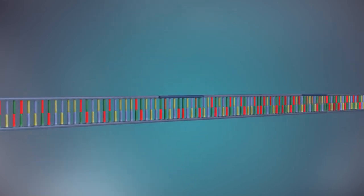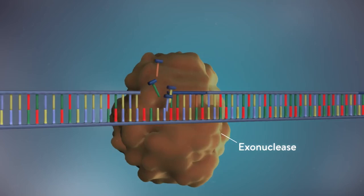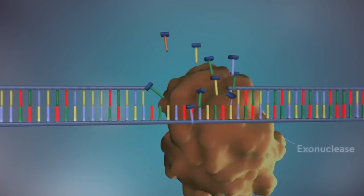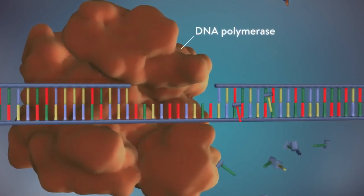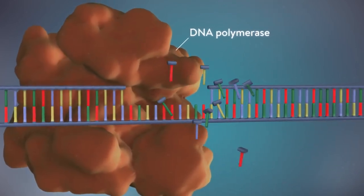Once the new DNA has been made, the enzyme exonuclease removes all the RNA primers from both strands of DNA. Another DNA polymerase enzyme then fills in the gaps that are left behind with DNA.